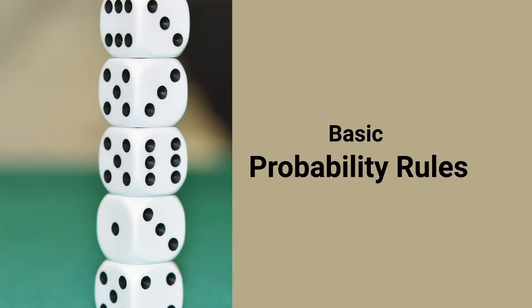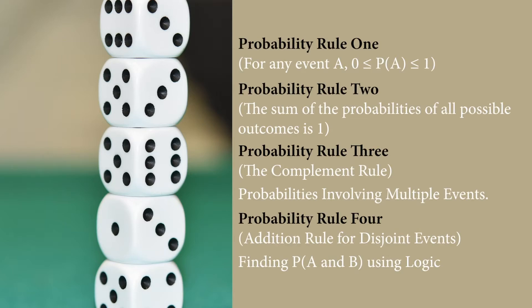There are certain probability rules which we will exclusively cover in coming sessions. These focus on events: probability rule 1, rule 2, rule 3, and probabilities involving multiple events. Probability rule 4 talks about the addition rule for disjoint events, finding P(A and B) using logic. For rule 1, for any event, 0 ≤ P(A) ≤ 1. The sum of the probabilities of all possible outcomes is 1. We will cover this more collaboratively in our coming sessions.